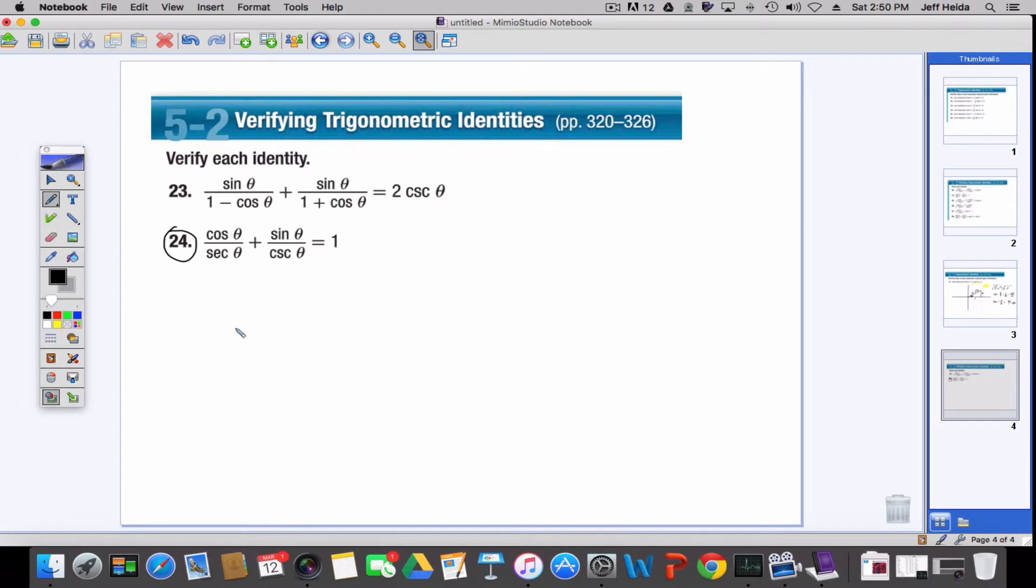So what we're going to do with 24 is just write everything in terms of sine and cosine. Secant is 1 over cosine. Okay, I'm going to cut this short because it is absolutely crazy and driving me crazy. You get the idea.